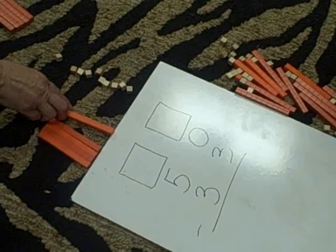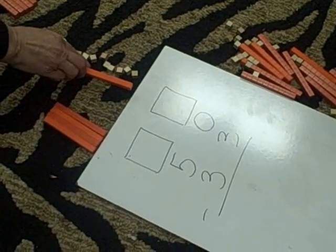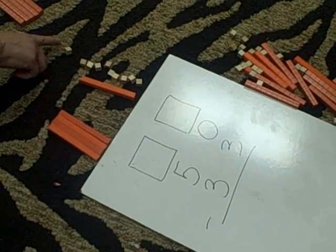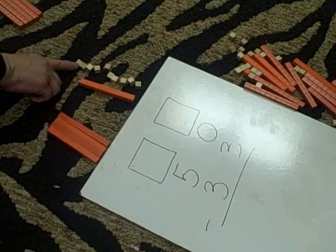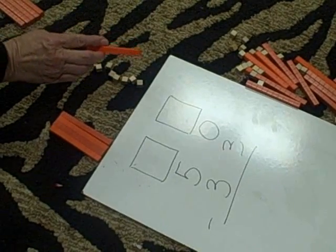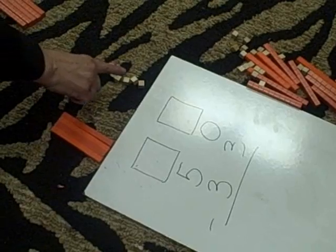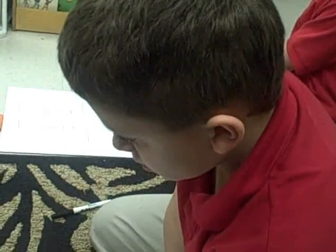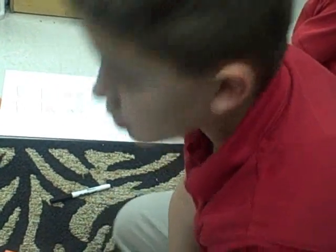so what we're going to do is take one of these tens and move it over to the ones. So basically, now we have instead of this one ten, we have ten ones. So what's going to go in this box now as our new number?